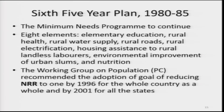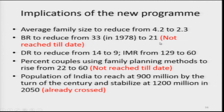NRR — net reproduction rate — means that if NRR of 1 is achieved, a woman is on average producing one daughter in her lifetime under the prevailing conditions of fertility and mortality. The implications of the new program were: average family size to reduce to 2.3, birth rate to 21, death rate to 9, infant mortality rate to 60, percent of couples using family planning methods to 60, and India's population to reach 900 million. Even today in 2019, none of these goals except average family size has been achieved — average family size of 2.3 has been achieved, but only recently.